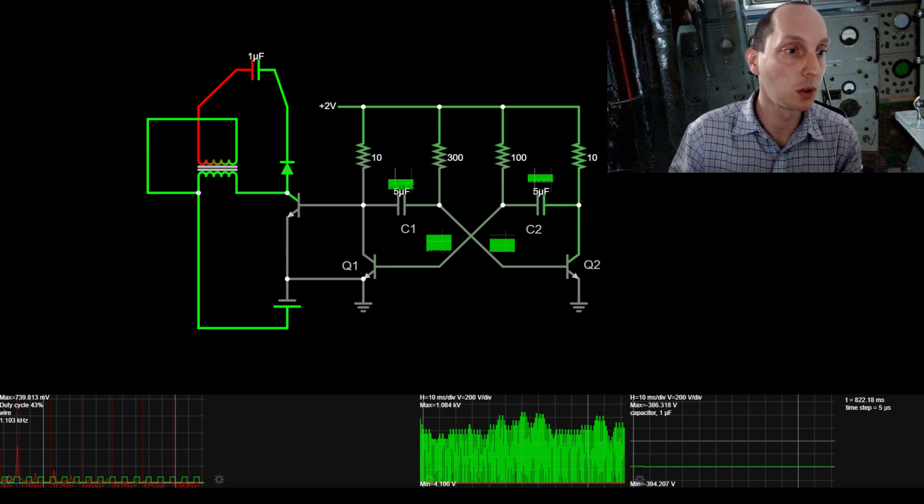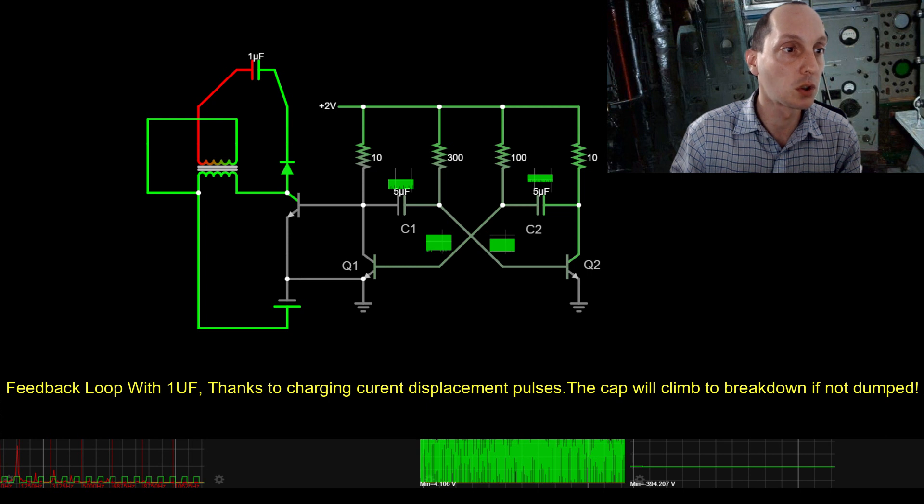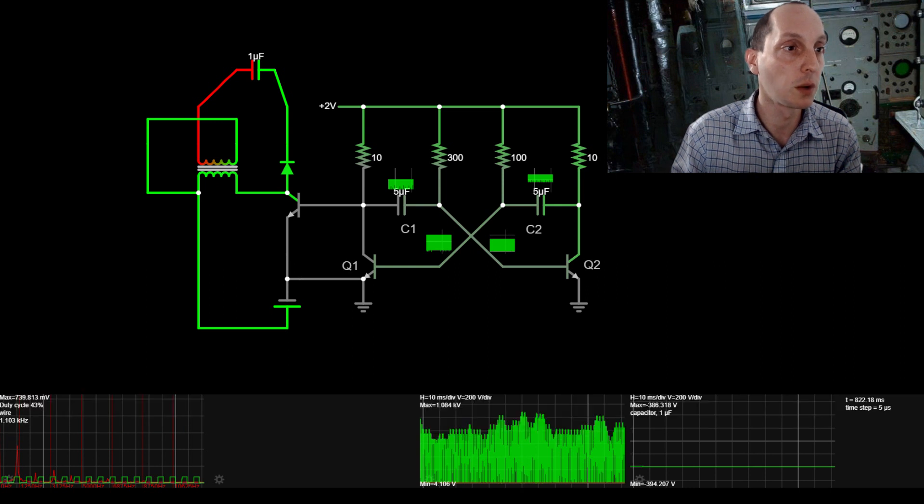It creates a feedback loop with the inductive kickback back and forth, and to prevent the ramp up, the charging one microfarad capacitor will bring up that voltage. And as you see, in less than one second we get hundreds of volts, so we could use this mechanism to extend it into a cap dump to charge our batteries.